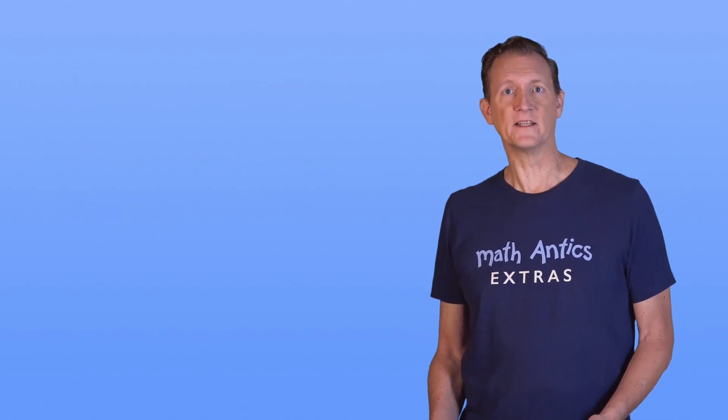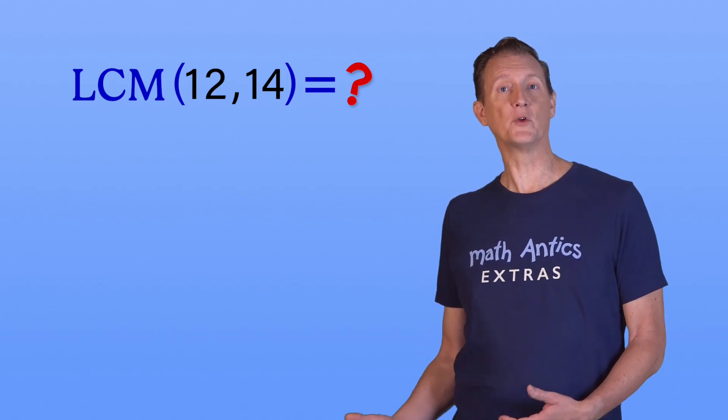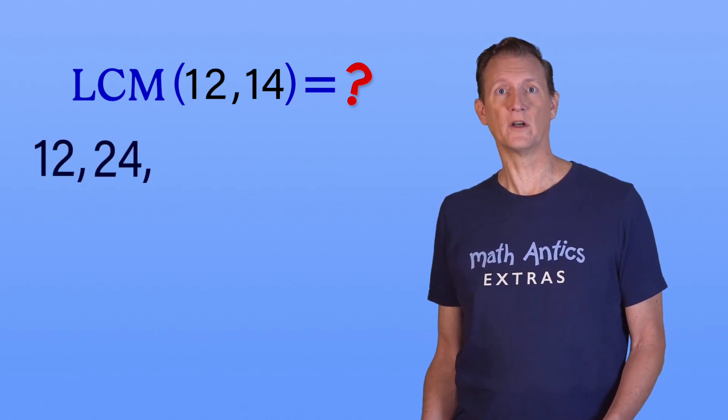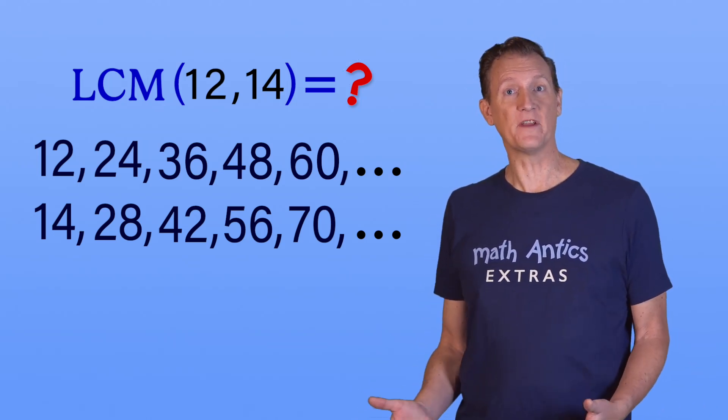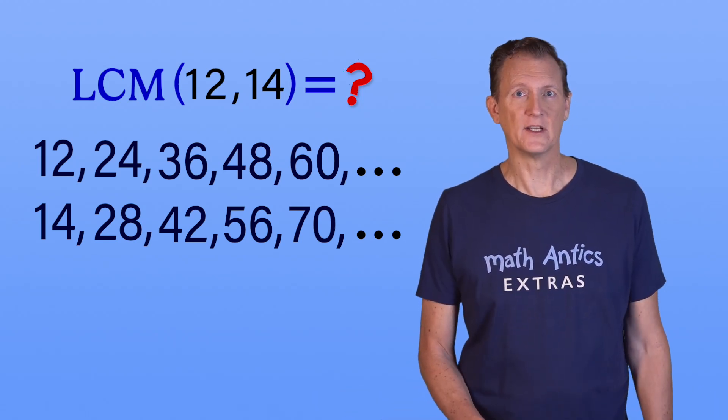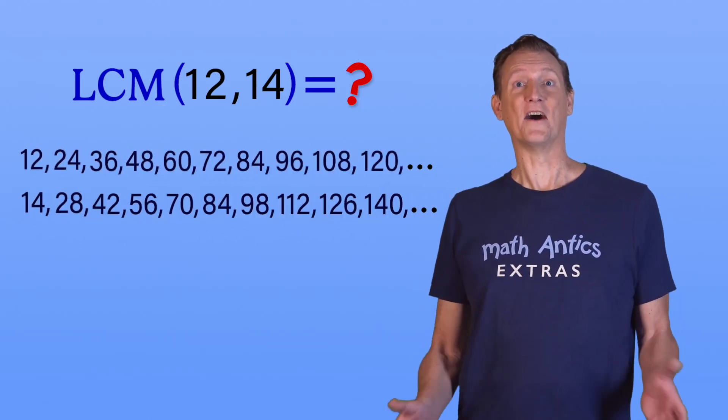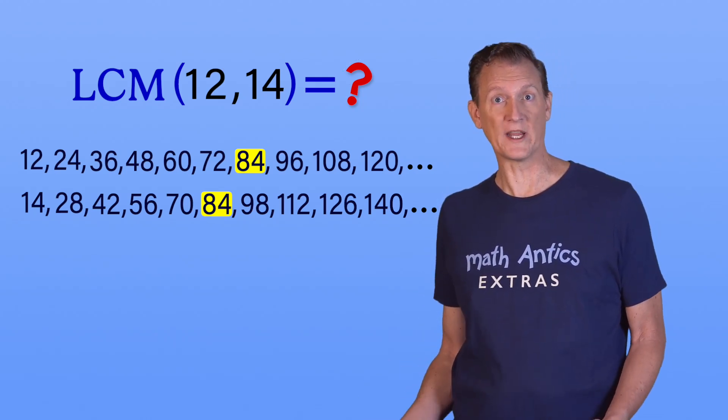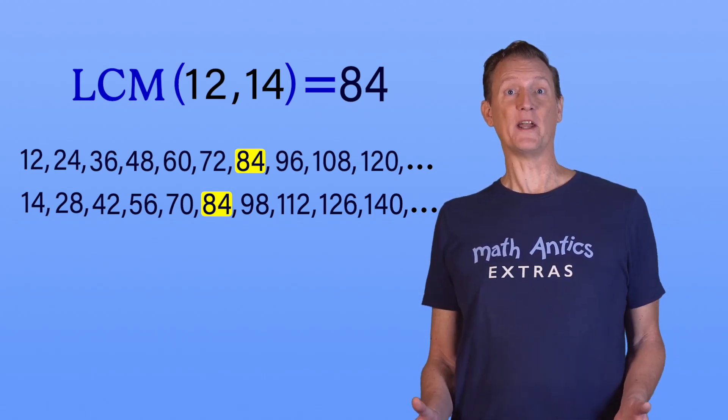But what if you want to find the least common multiple for slightly bigger numbers like these, 12 and 14? Let's start by making 5 multiples of each and see what happens. 1 times 12 is 12, 2 times 12 is 24... Well, we made 5 multiples of each number, and we haven't found a multiple that they have in common yet. Let's try 5 more of each. 6 times 12 is 72... Ah, there we go! The number 84 is in both lists, and since it's the first common multiple we encountered, it's got to be the least common multiple of 12 and 14. But that was quite a bit of work, wasn't it?